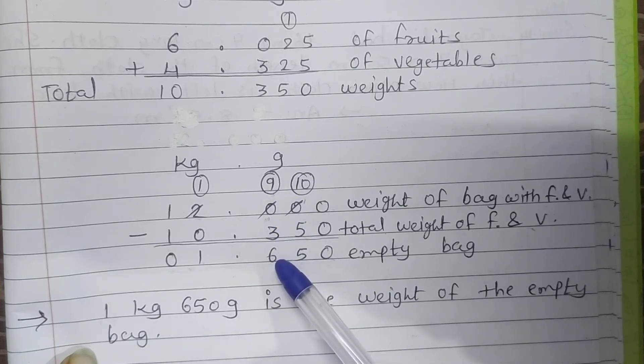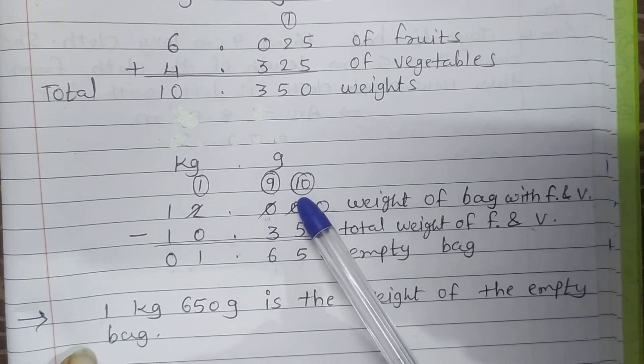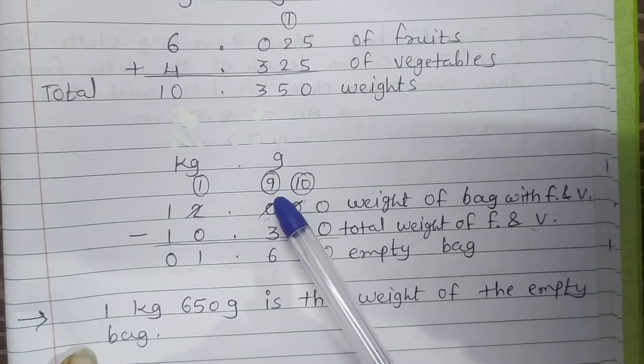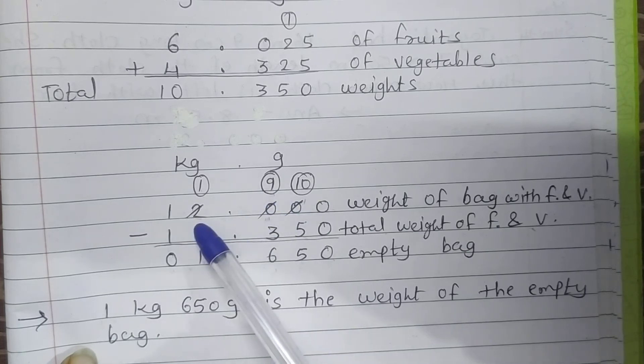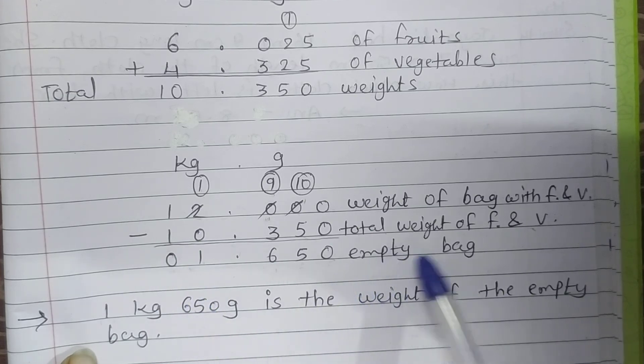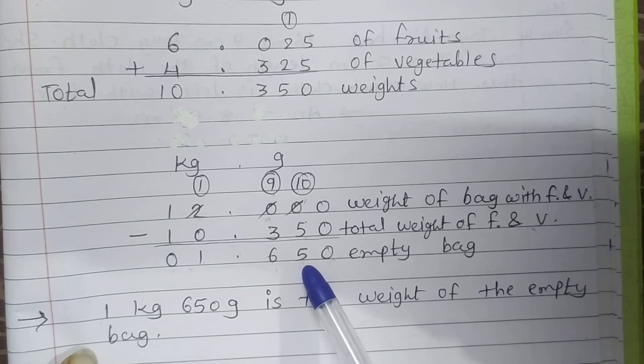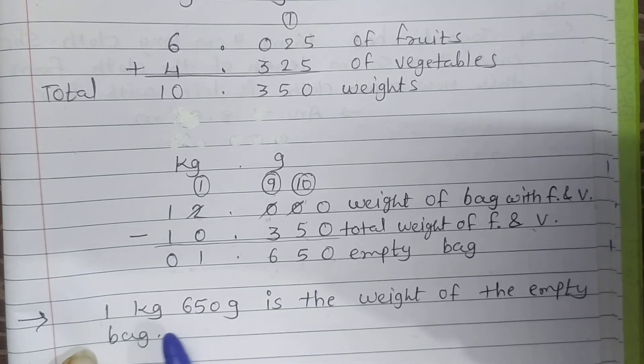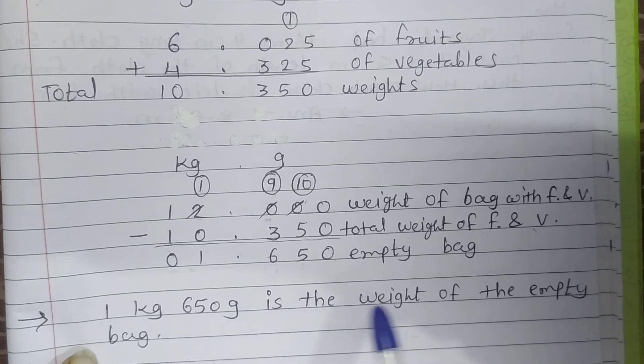9 minus 3 is 6. Point comes, put point. After taking 10 borrow, 0 comes, so we have put 9. And now the number comes, cut 2, less than 2 is 1. 1 minus 0 is 1, and 1 minus 1 is 0.